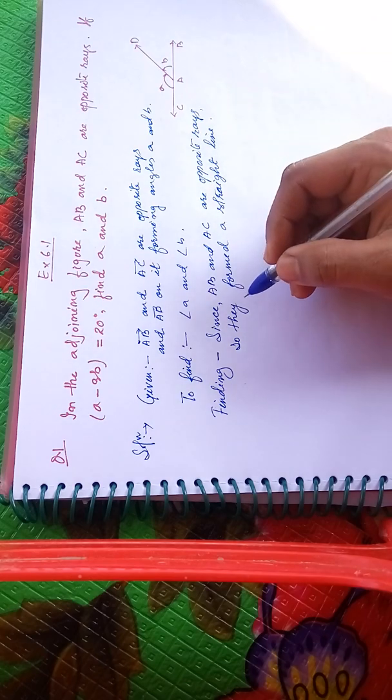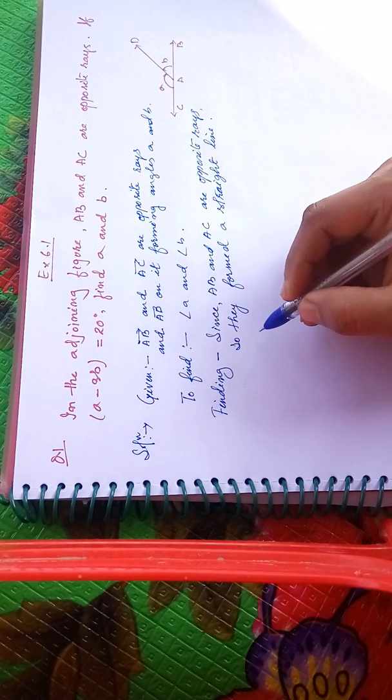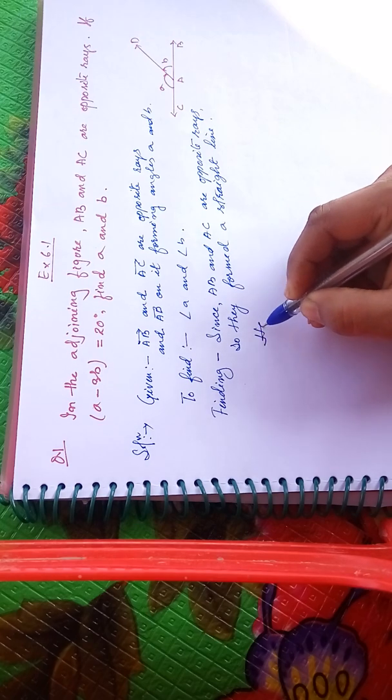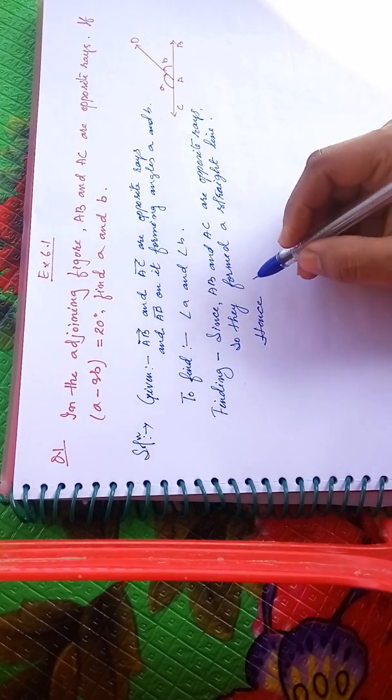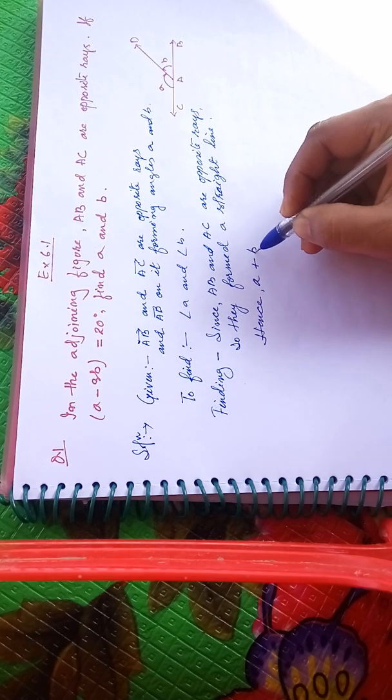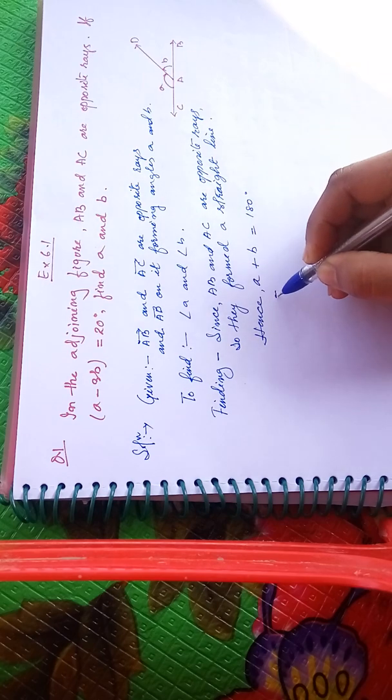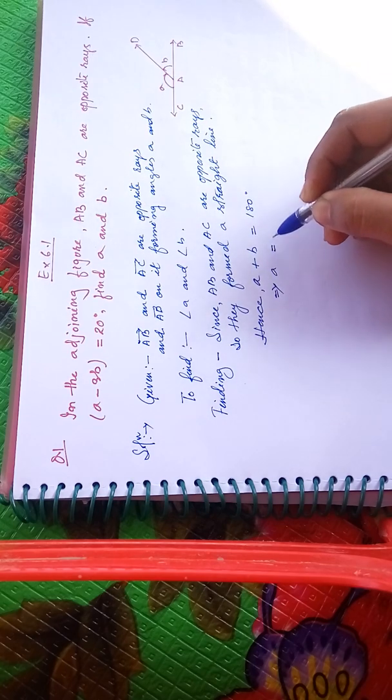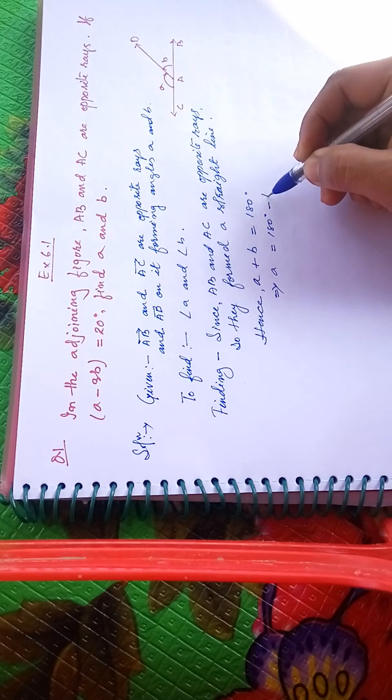A straight line forms a linear pair. Therefore, angle A plus B equals 180 degrees, and A is equal to 180 degrees minus B.